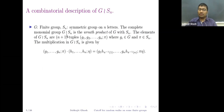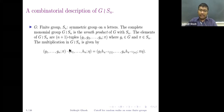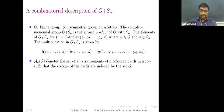Let me define the wreath product of a finite group with the symmetric group. If G is a finite group and S_n is the symmetric group on n letters, then the complete monomial group G ≀ S_n is the wreath product. Its elements consist of (n+1)-tuples where the first n components are from G and the last component is from S_n. The multiplication is: (g_1,…,g_n, π)·(h_1,…,h_n, η) = (g_1 h_{π^{−1}(1)},…,g_n h_{π^{−1}(n)}, πη) — rearrange using π^{−1} then multiply componentwise.